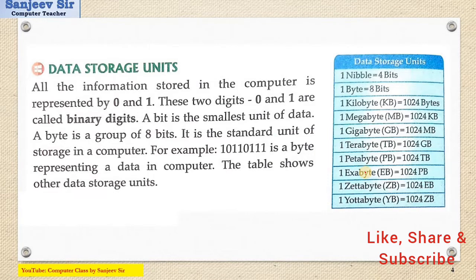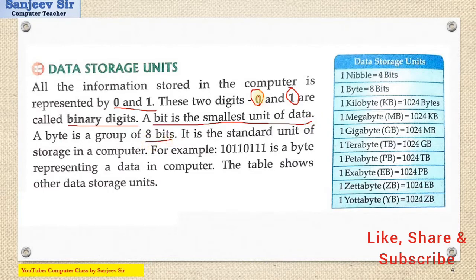The next topic is data storage units. We know that in a computer all information is stored in the form of zero or one — binary digits. One individual zero or one is known as a bit. Bit is the smallest unit of data. A group of bits — eight zeros and ones combined — is known as a byte. This is the complete table here that I hope you will learn.